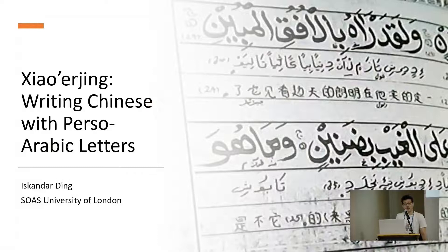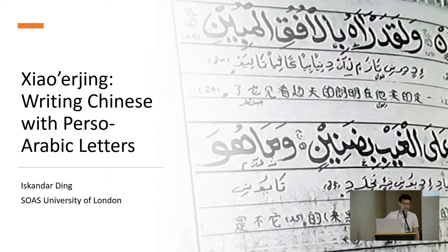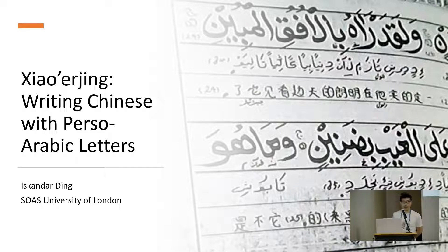Many people who study Chinese, learn Chinese, or even speak Chinese as their native language, don't really know that apart from the Chinese characters, it is also written in the Persian Arabic script, and also the Cyrillic script. Mandarin specifically is written in three scripts culturally: Chinese characters, Persian Arabic called xiao'erqin, and the Cyrillic script in Central Asia.